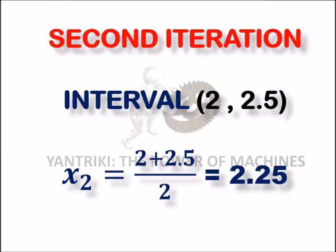The second iteration will be x₂ = (2 + 2.5)/2 because now the intervals are 2 and 2.5. So, the value of x₂ will be 2.25.